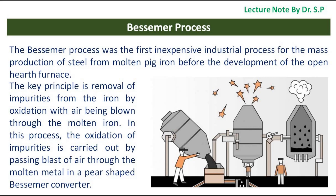Bessemer Process. The Bessemer process was the first inexpensive industrial process for the mass production of steel from molten pig iron before the development of the open hearth furnace. The key principle is removal of impurities from the iron by oxidation with air being blown through the molten iron.